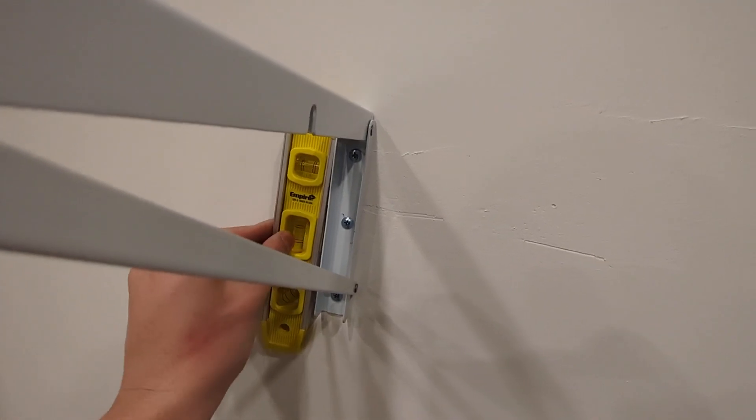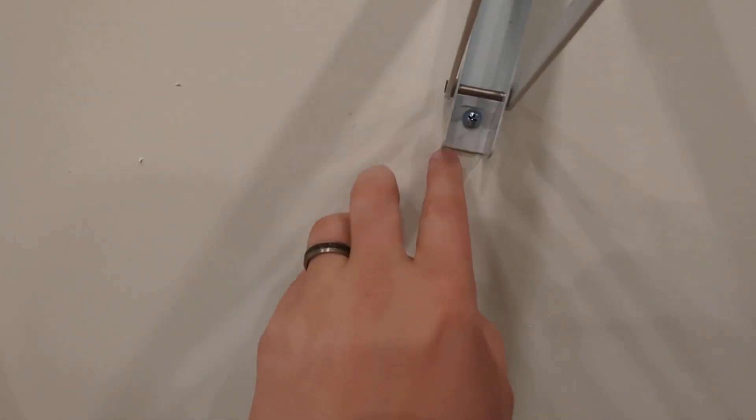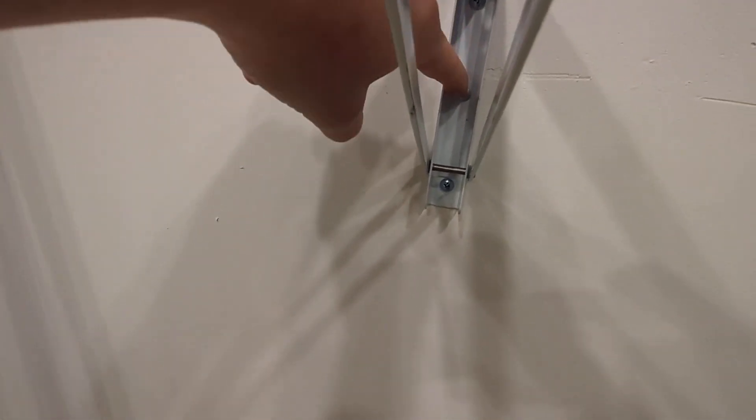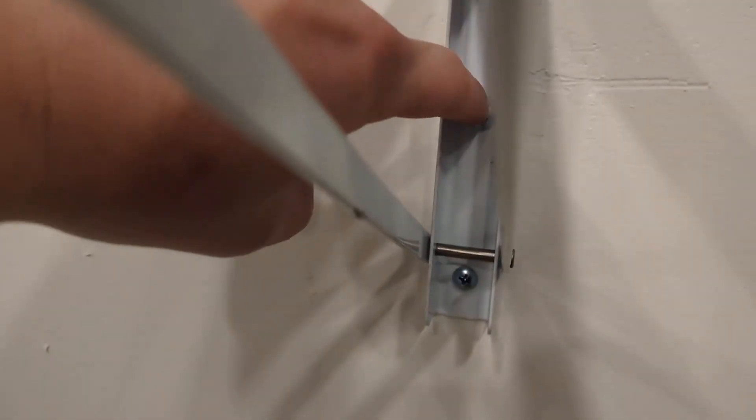When the initial screw was in, I used a level to make sure it was perfect up and down. Then I put the bottom one in, then the middle one. The middle one's a pain in the butt. Make sure you have a long bit to get the middle one in.